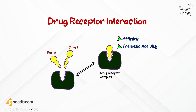To illustrate drug-receptor interactions, let's consider a receptor and two drugs. Looking at their structures, it is evident that drug A can bind to the receptor while drug B cannot, due to structural differences. When drug A binds to the receptor, it forms a drug-receptor complex, which enables the drug to produce a specific action on the receptor or the cell. This interaction is known as drug-receptor interaction and is responsible for various actions in the body.